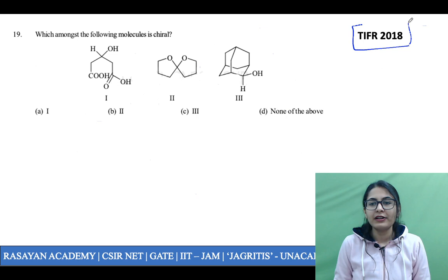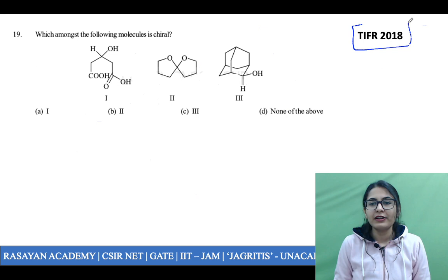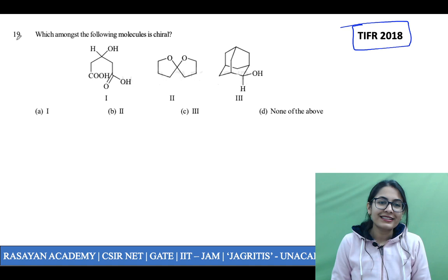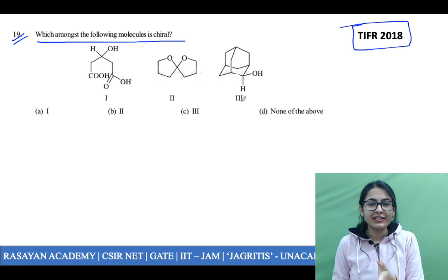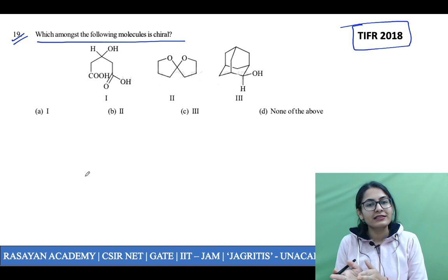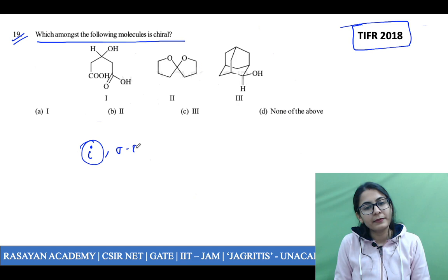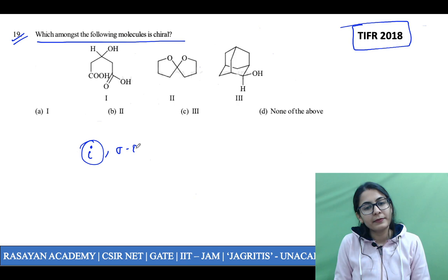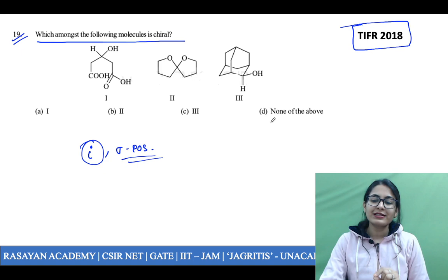Another TIFR 2018 question: which amongst the following molecules is chiral? We have already done this in our plus classes. You have to find out which of these molecules is chiral — either you find the chiral center or you find a sigma plane of symmetry to say that a molecule is chiral or achiral. This question comes from the Clayden solution manual, suggested solutions for chapter 14, stereochemistry — the first question of that chapter.